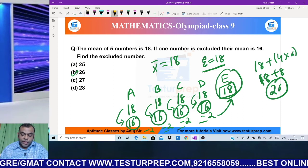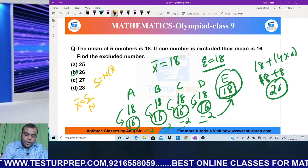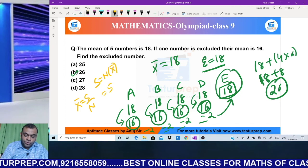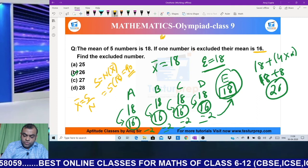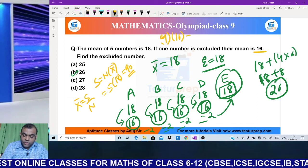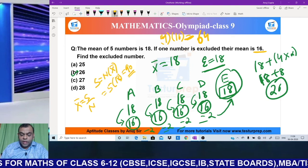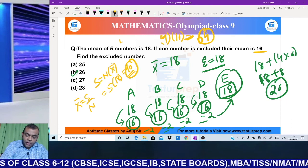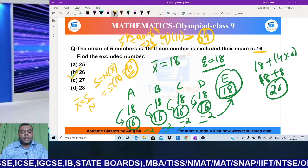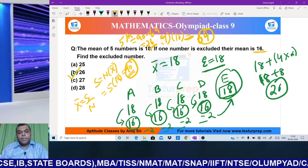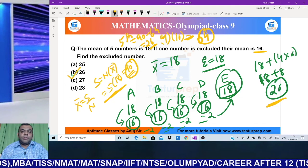Another way to solve this: average = sum ÷ number of observations, so sum = n × average. First case: 5 values with average 18, total = 90. Second case: 4 values with average 16, total = 64. The fifth value = 90 - 64 = 26. So the person leaving took 26 with them. You can use either method - the Olympiad conceptual method or the normal mathematical method.